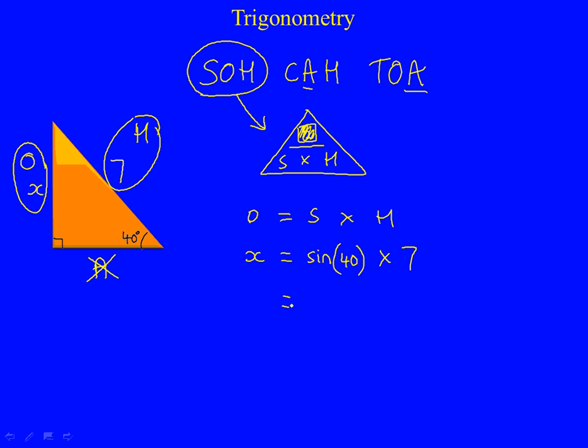And all we do now is we type that into a calculator. So we type in sin 40 times 7, which will give us the answer of 4.5. So the missing side is 4.5.